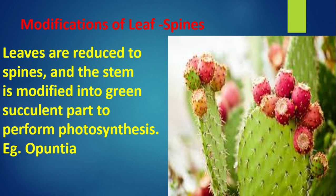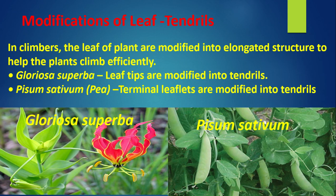Modification of leaves — Spines: Leaves are reduced to spines and the stem is modified into a green succulent part to perform photosynthesis. For example, Opuntia. Tendrils: In climbers, the leaves of plants are modified into elongated structures to help the plant climb efficiently. For example, in Gloriosa superba, the leaf tips are modified into tendrils. In Pisum sativum, terminal leaflets are modified into tendrils.